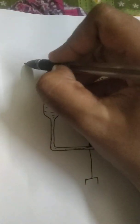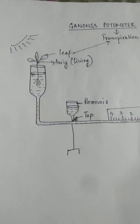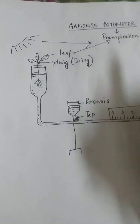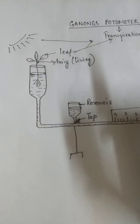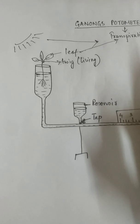And this entire setup is kept under sunlight. Because sunlight is a very important phenomenon which is required for transpiration. It is only under the sunlight that the stomata will open. And the moment the stomata opens automatically transpiration will begin.